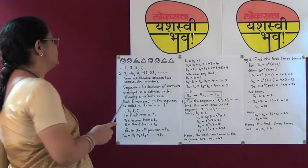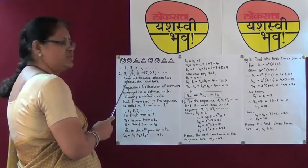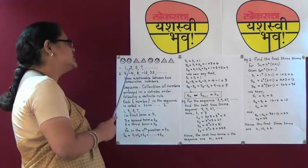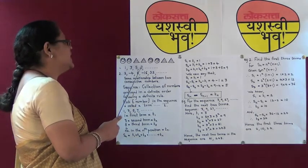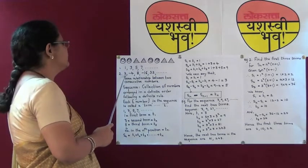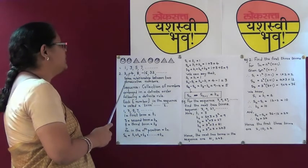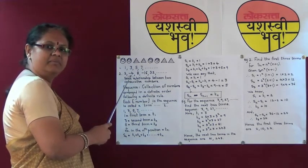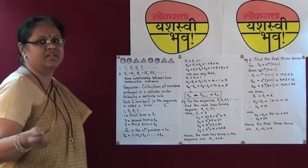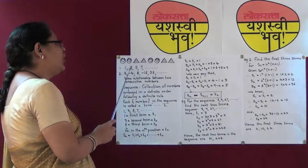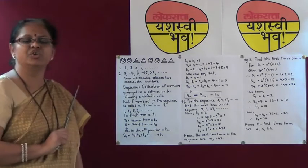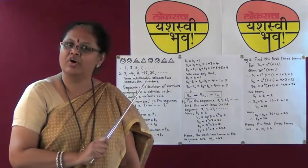If you carefully observe these two arrangements, in the first arrangement, the second number is obtained by adding 2 to the first number. Again 2 is added to get the third number, and so on. In the second arrangement, the first number is 2; multiply minus 2 to it, we get minus 4. Again multiplying minus 2, we get 8. Again multiplying minus 2, we get minus 16 and the series continues. So there is some relationship between two consecutive numbers, and this we call as a sequence.